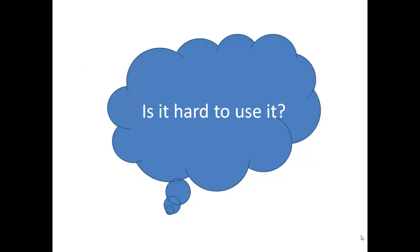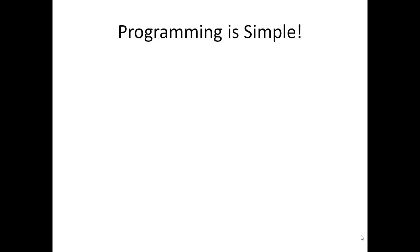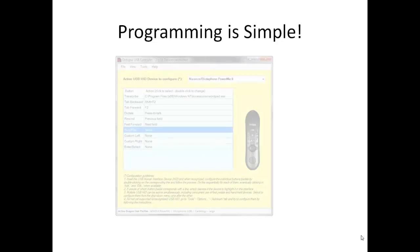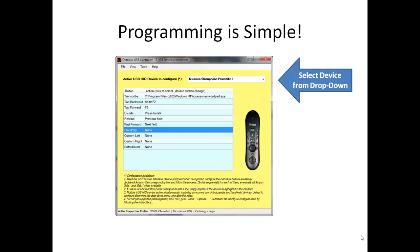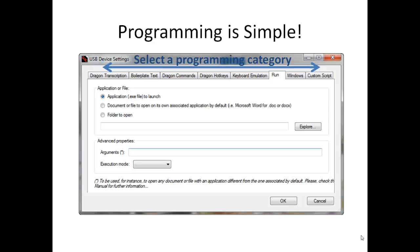But is it hard to use? Is assigning behavior to a button push complicated? Hardly. Programming is quick and intuitive. Just select your device from the drop-down, select and double-click on the line corresponding with the button or key you want to program, and you will see the main device settings window — from which you need merely select the tab corresponding to the type of function you want to program, assign the function, and you're done.